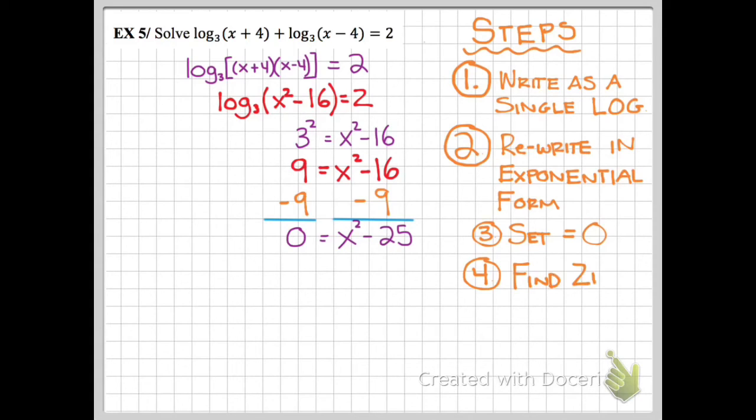Now I want to go ahead and find the zeros of the polynomial that is left, and to do that I factor x plus 5 times x minus 5, and I see that my zeros are x equals negative 5 and x equals positive 5.